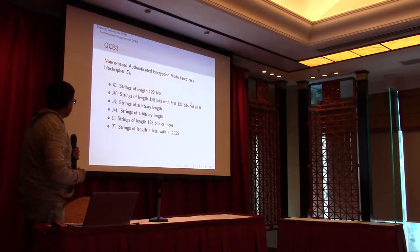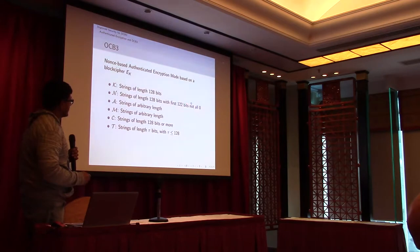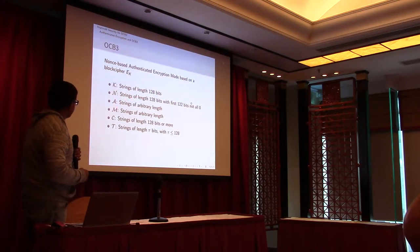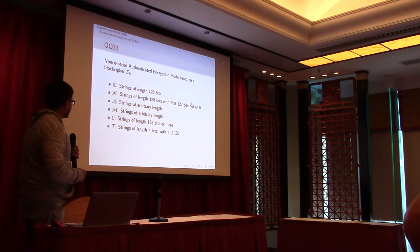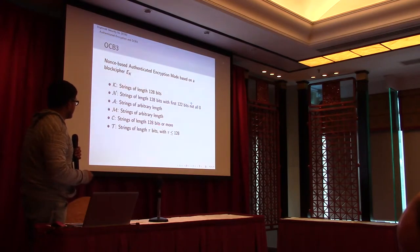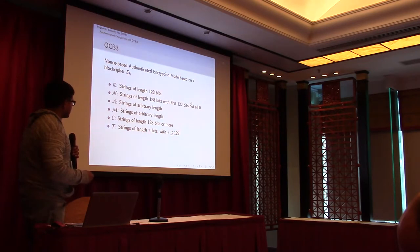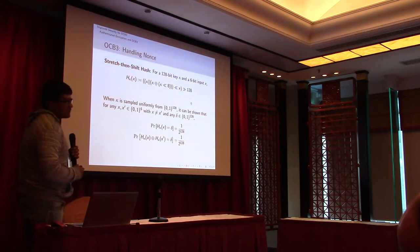So in OCB3, the key space is 128 bits, the nonce space is 128 bits with the constraint that first 122 bits are not all zero. This constraint is kind of important and will get used in the proof. We have associated data, which is strings of arbitrary length, the message, which is also arbitrary length, ciphertext, which of course has a minimum length of 128 bits. And finally, the tag has maximum length of 128 bits, but if you want, you can have a smaller tag.